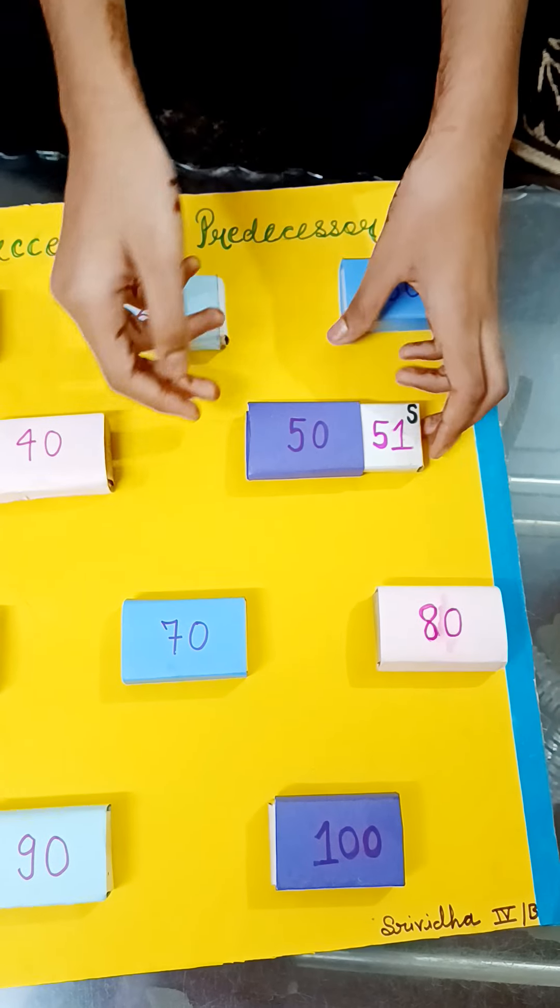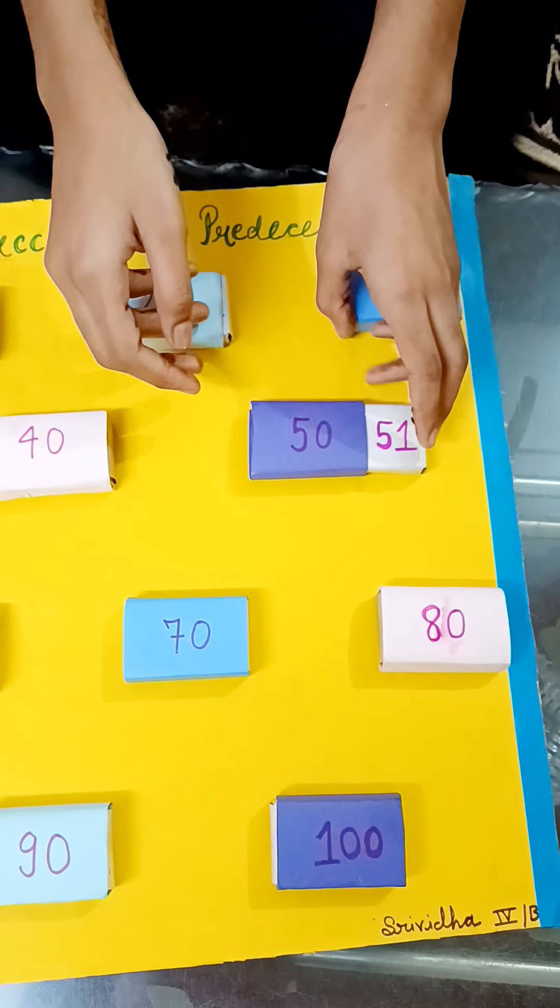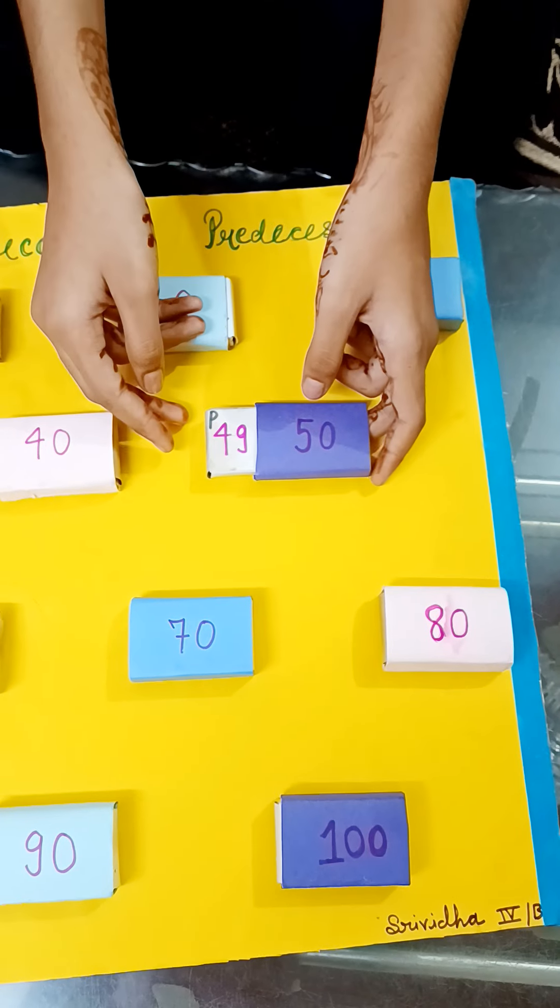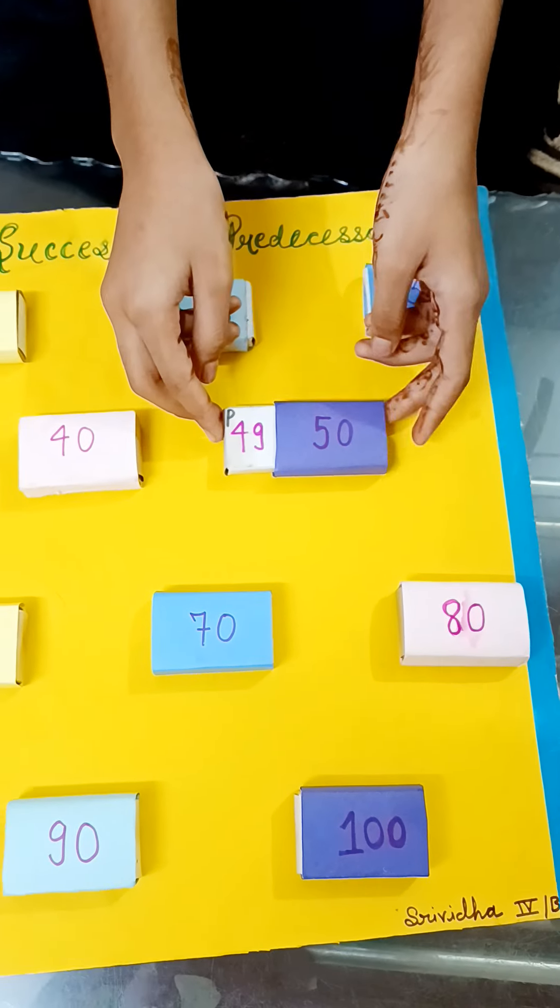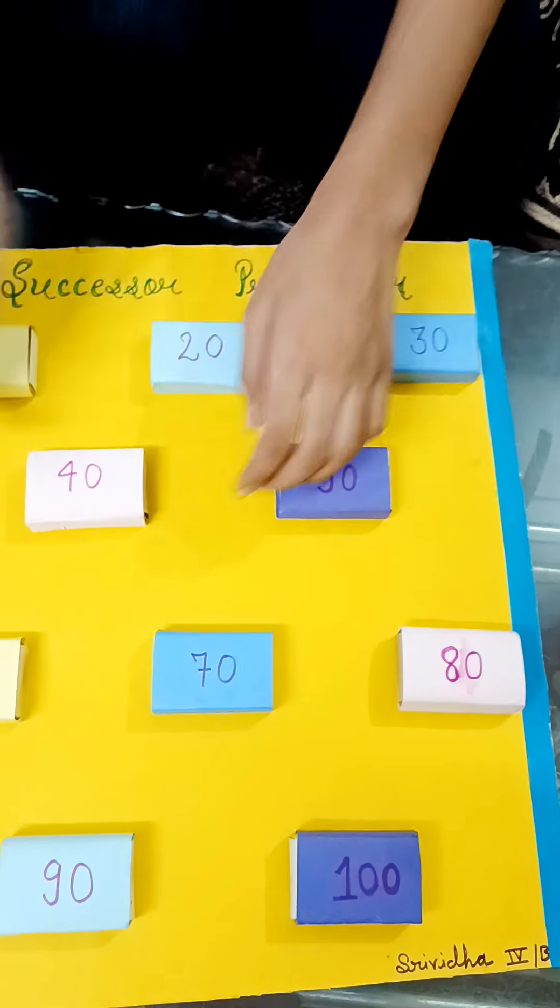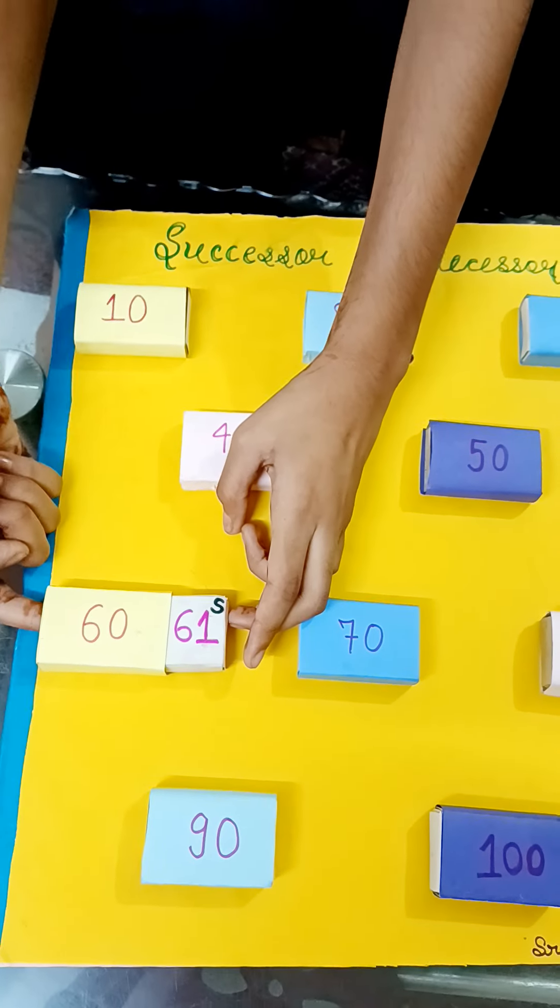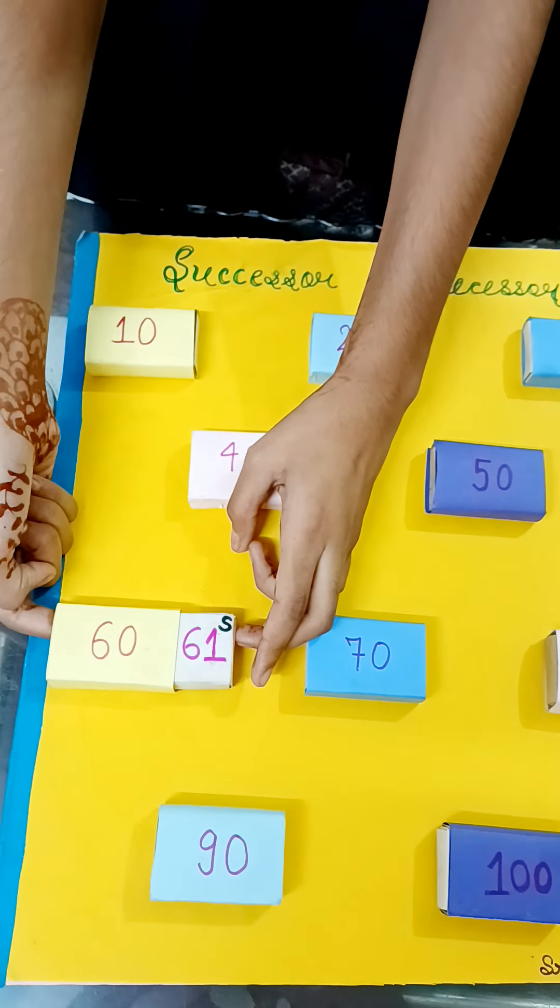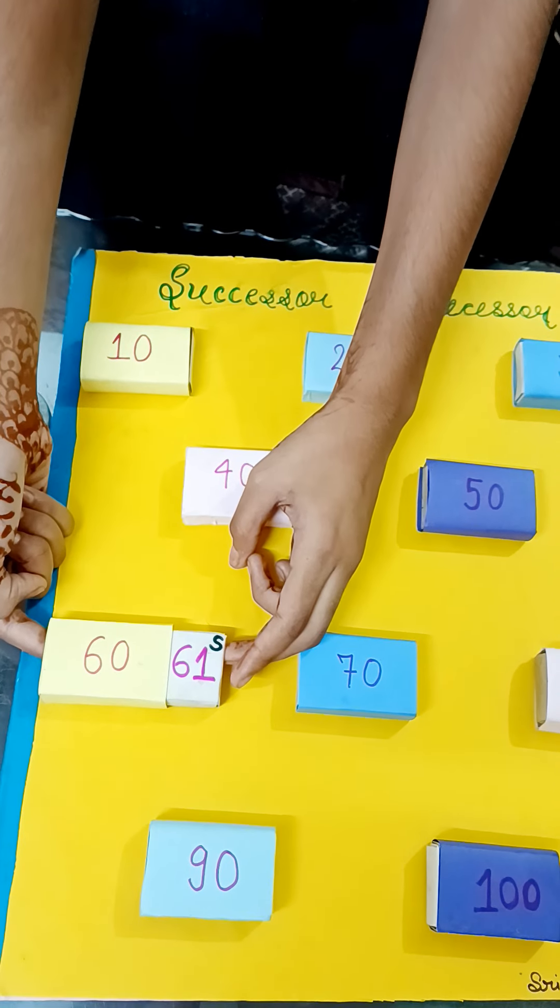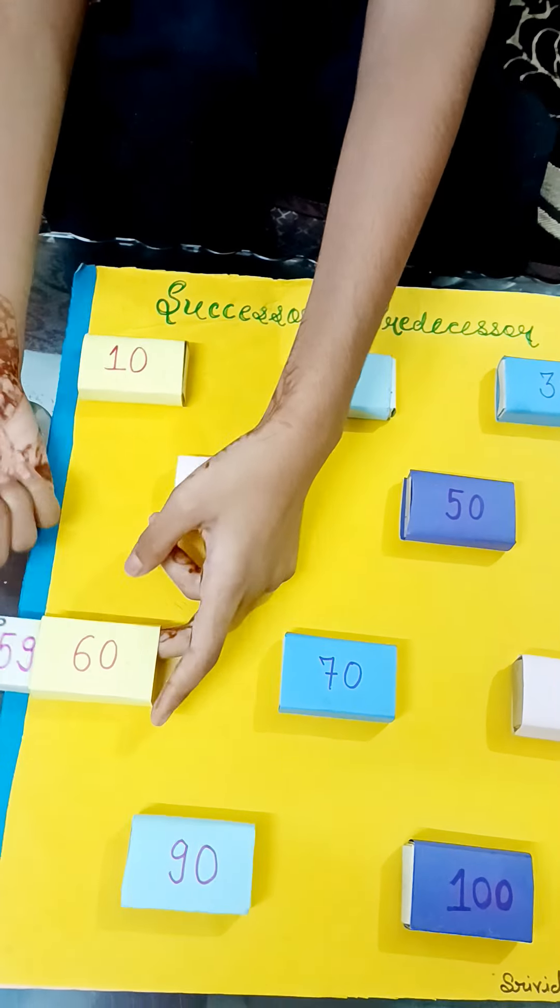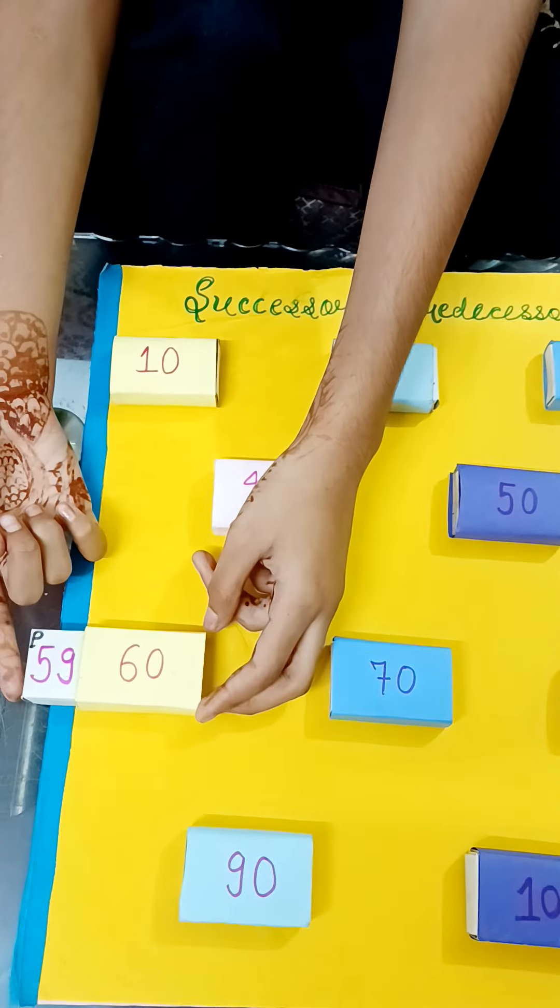51 is successor of 50 and 49 is predecessor of 50. 61 is successor of 60 and 59 is predecessor of 60.